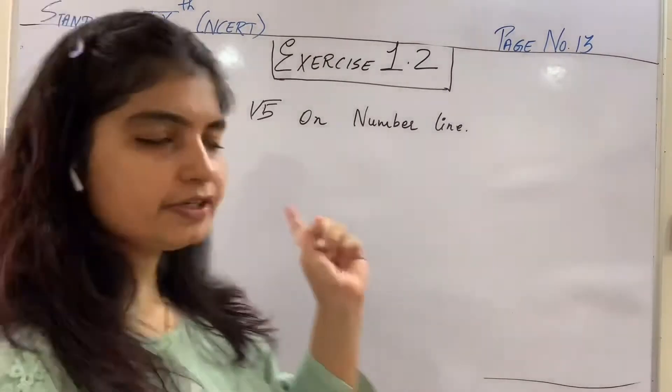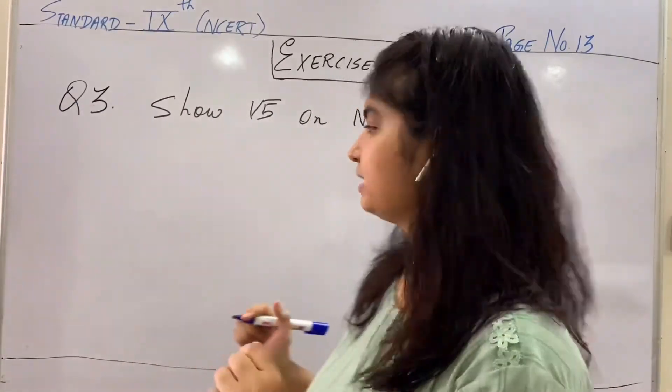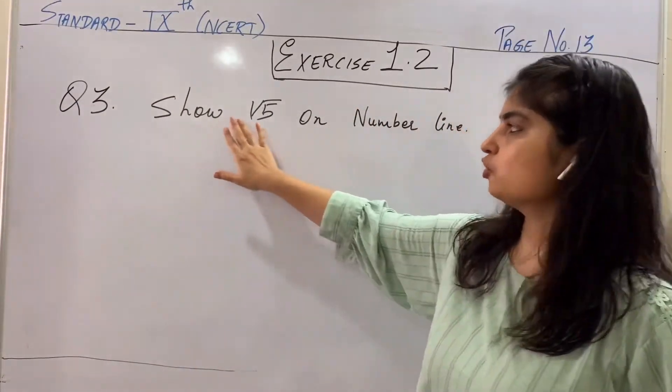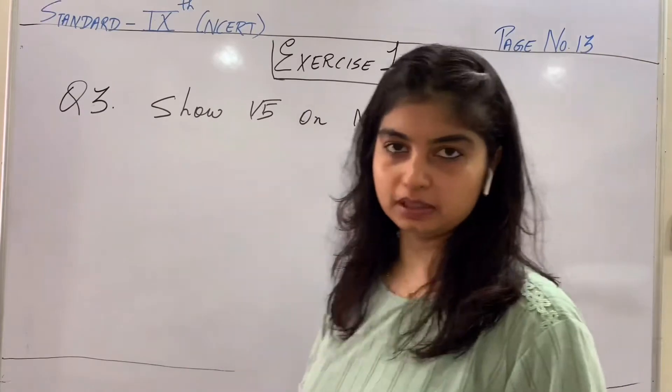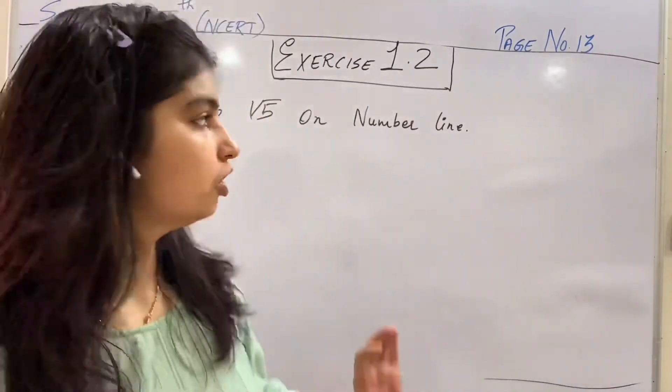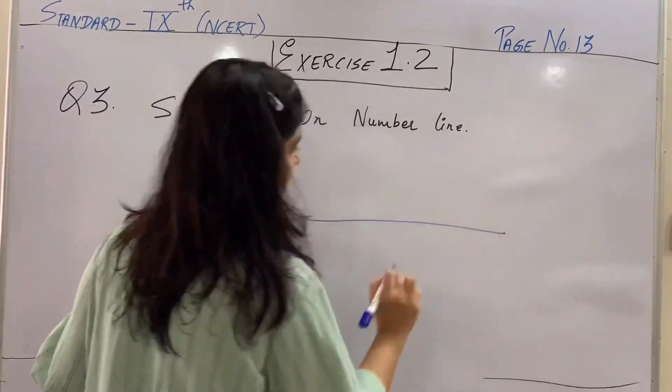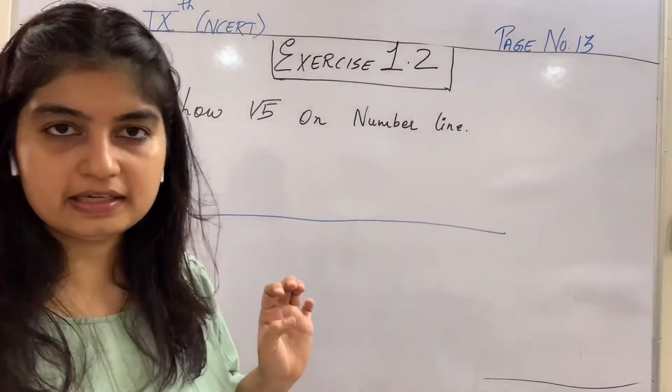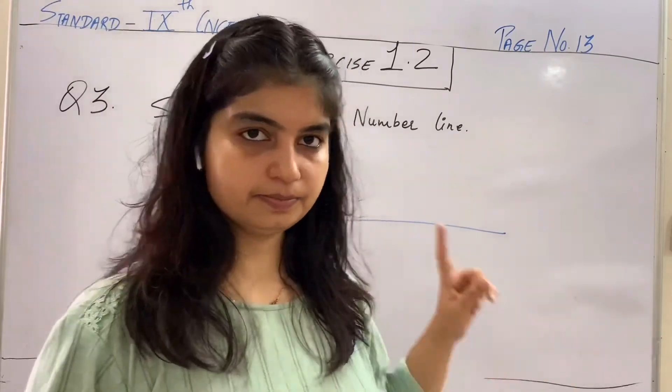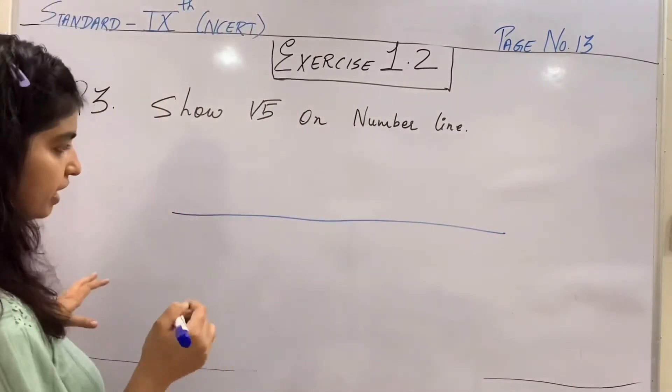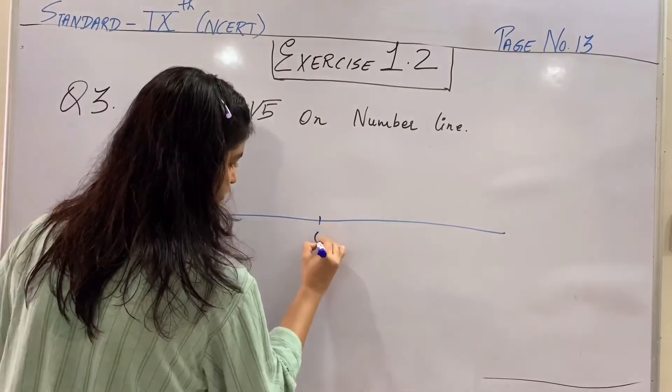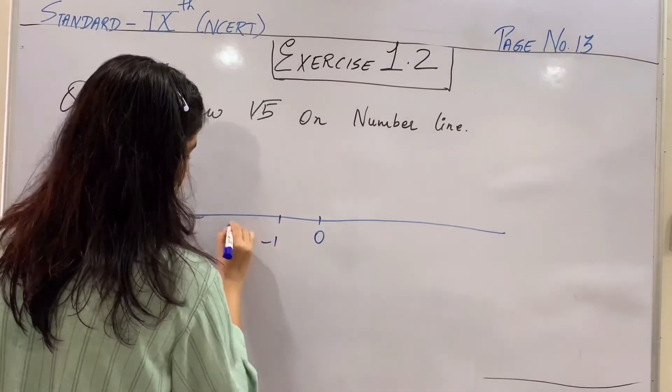So third question in the exercise 1.2 says, to locate or to show root 5 on the number line, how can you represent root 5 on the number line? I have already shown you this before, but this being the part of the exercise again, we will repeat the plotting of root 5. Aapko shayad se yaad hi hoga, again, it will be a revision. 0, minus 1, minus 2, minus 3.